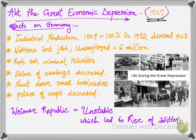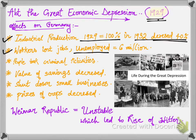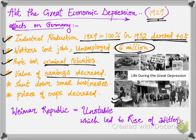Industrial production, which was at 100% in 1929, reduced by 40% in 1932. Workers lost their jobs and those who worked were paid low wages — at the time of this depression, 6 million people were unemployed in Germany. People started doing criminal activities. The value of savings of poor people decreased. Retailers and small-scale manufacturers had to shut down their businesses. The price of crops of farmers decreased rapidly. From rich to poor, everyone was affected by the Great Economic Depression.